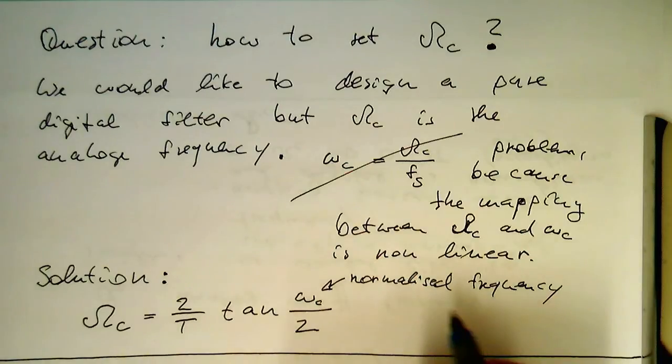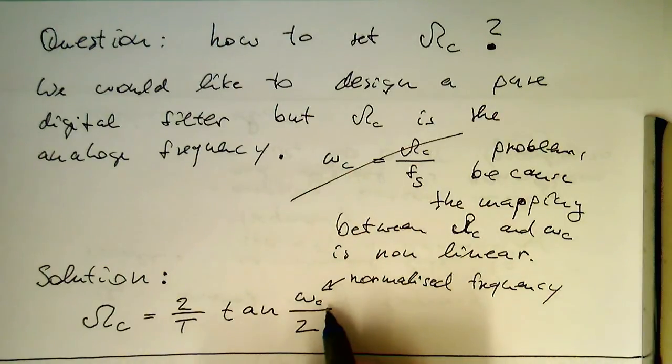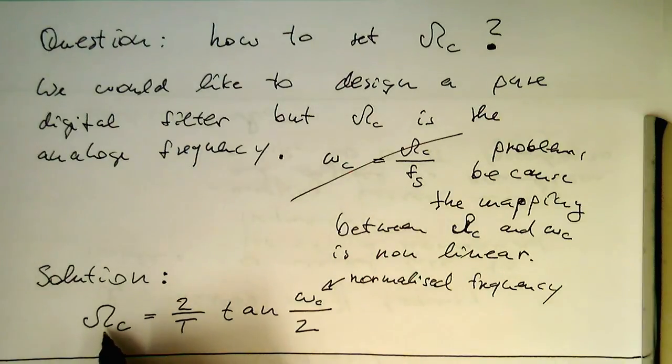So what we do is we just put our normalized frequency, our desired cutoff frequency in this formula, and we're getting our omega c out and we're putting that omega c then into our filter function.